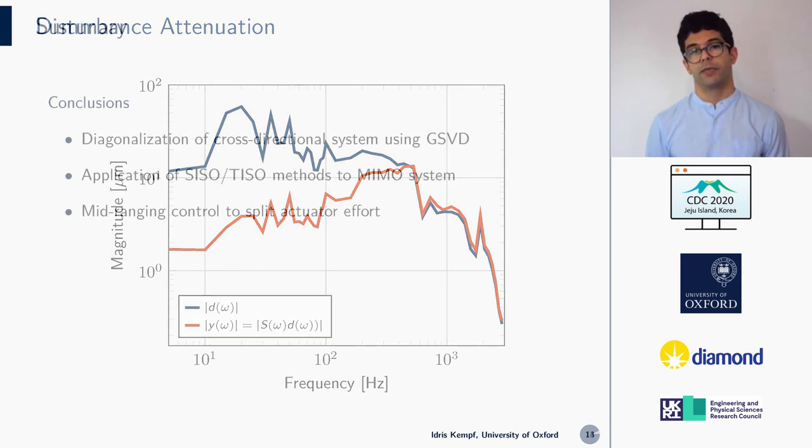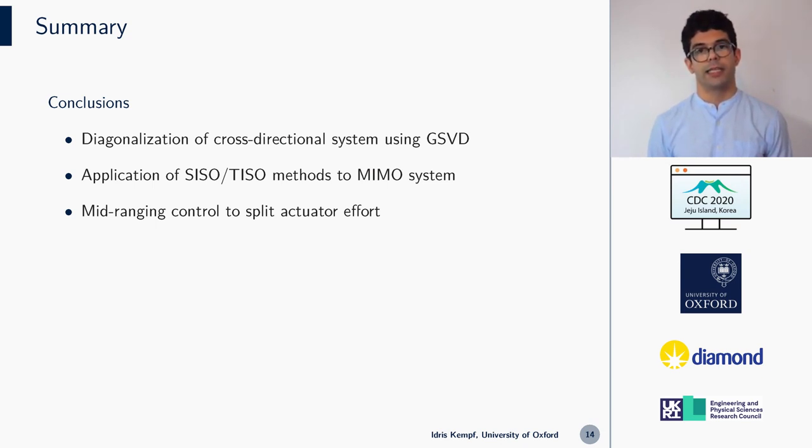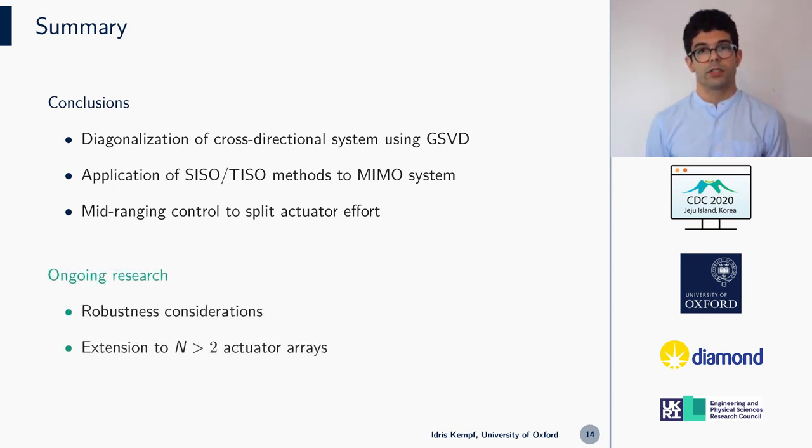With that said, I am coming to an end. In this presentation, we saw how to use the generalized singular value decomposition for the purpose of diagonalizing a cross-directional system. This diagonalization enabled us to synthesize a controller using methods from two input-single-output controller synthesis. The mid-ranging control approach allowed us to split the actuator effort among slow and fast actuators. Our ongoing research includes examining practical aspects of the control system that uses the GSVD, such as the robustness of the controllers, which is of particular relevance for Diamond Light Source. In addition to that, we are also investigating the use of the higher-order generalized singular value decomposition for cross-directional systems with more than two actuator arrays.